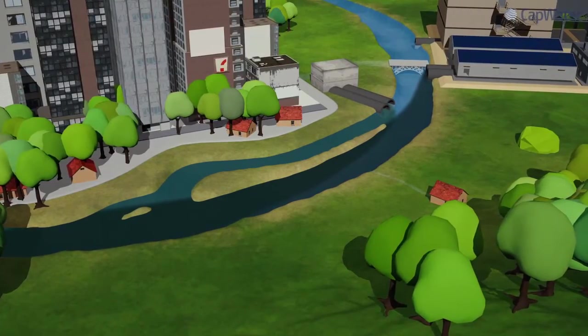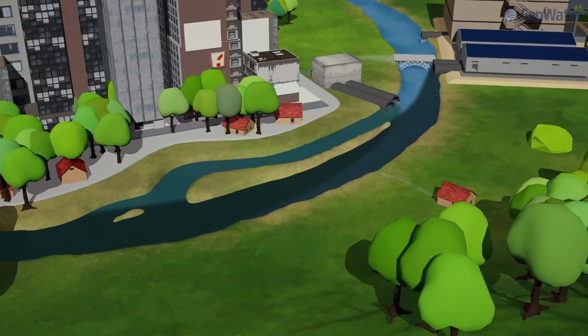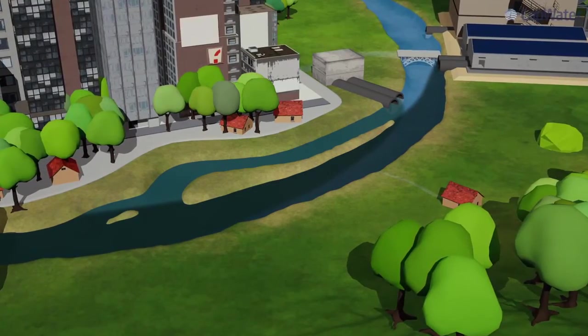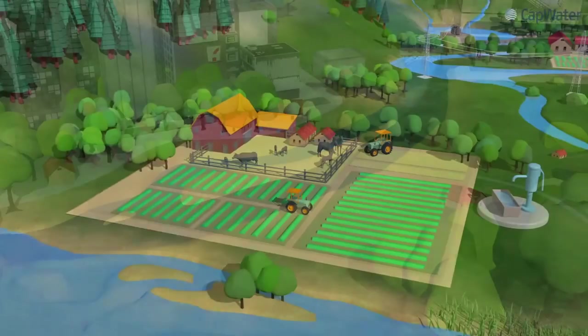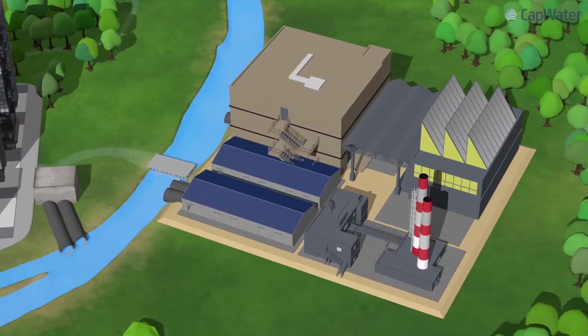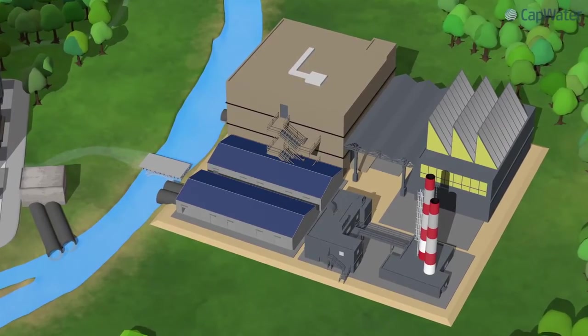By measuring water quality, we can understand the natural influence of soils and geology, but we can also assess the impact of human activities on water resources. For instance, agriculture, untreated sewage, and industrial wastewater are known pollution sources which have been deteriorating water resources worldwide.